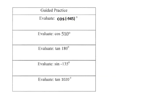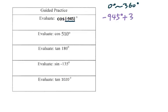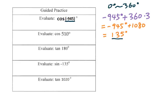Let's go to the example. Evaluate negative 945 degrees. First, you have to change this angle into a positive coterminal angle between 0 and 360. So we take negative 945 degrees and keep adding 360 — basically, add 360 times 3. You will get a positive angle, and that will be the coterminal angle.